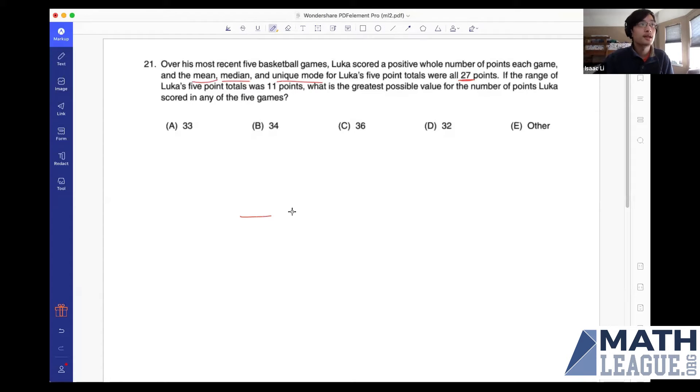Well, let's go ahead and write down these scores from least to greatest so that we know that the median middle number is 27, we know that the difference between these two numbers is 11, and we know that the unique mode here is 27, so there's another 27 somewhere here.